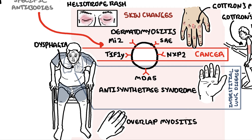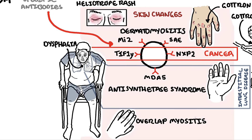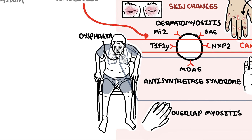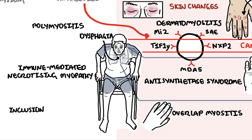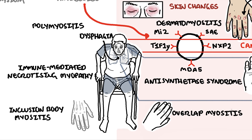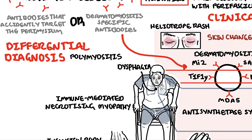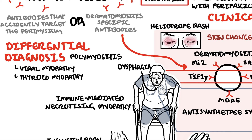Inflammatory myopathy differentials that have no skin involvement include polymyositis, immune-mediated necrotizing myopathy, and inclusion body myositis. Here is a hand of a person with inclusion body myositis — note muscle wasting of the hands. Other differentials include viral myopathy, thyroid-related myopathies, and myasthenia gravis.